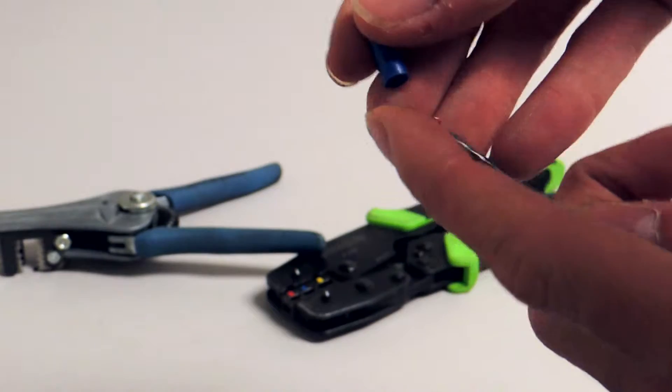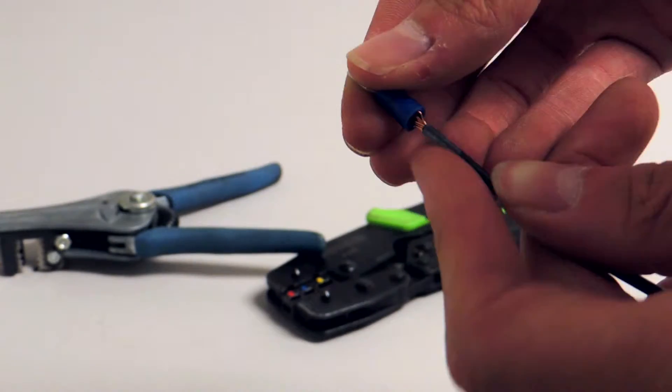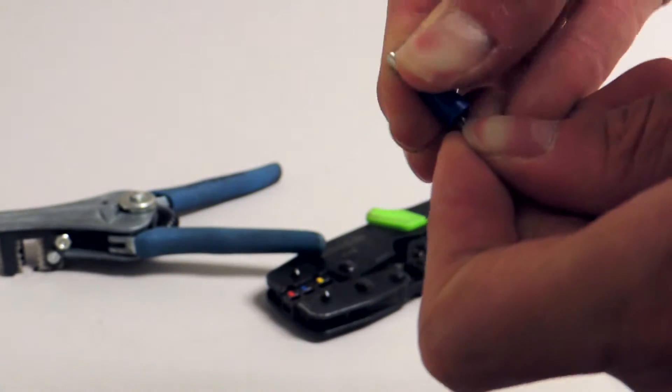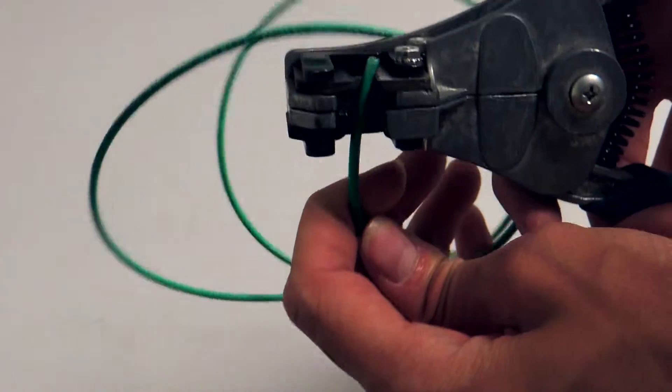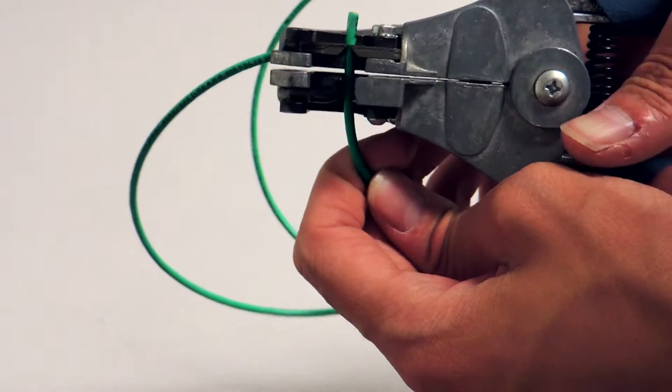You should prepare a black wire and a white wire to each have a stripped end and a female connector. Two female connectors are included with your ball valve. You will also need a green wire with two stripped ends.